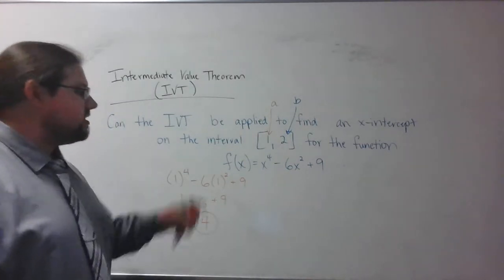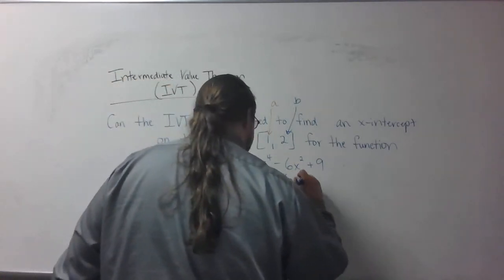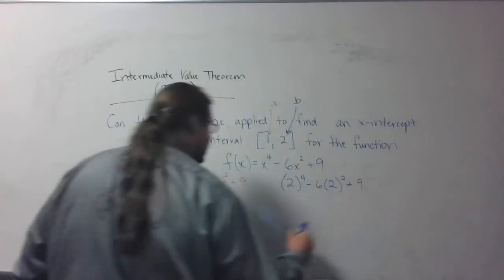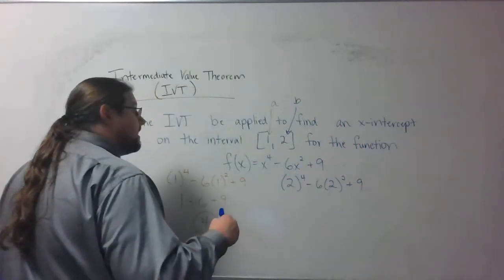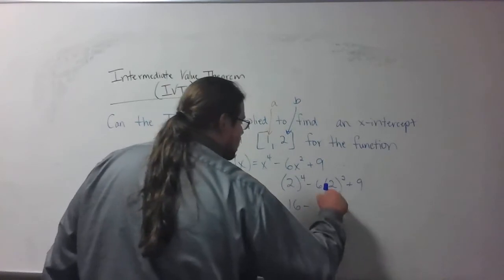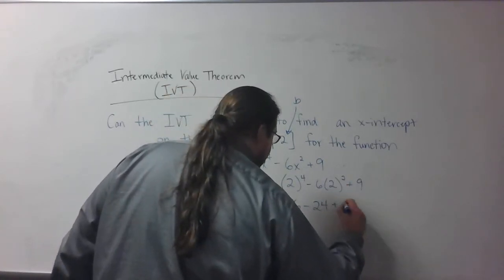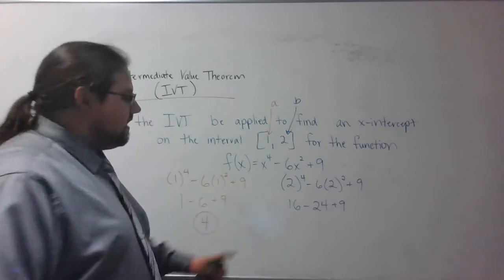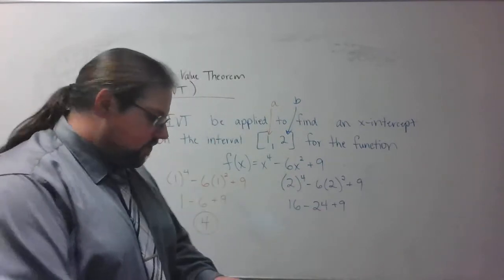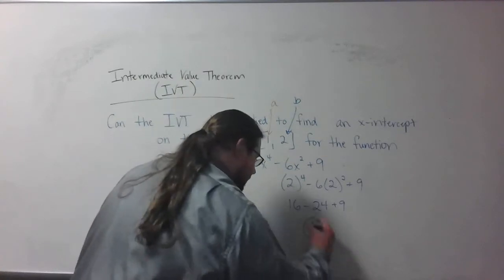Now I'm going to plug in 2 and see what happens. 2⁴ - 6(2)² + 9. 2⁴... 2² is 4, so 2⁴ is 16. Then 6 times 4, which is 24 plus 9. If I add 16 and 9, I get 25. If I subtract 24 from that, I get 1.